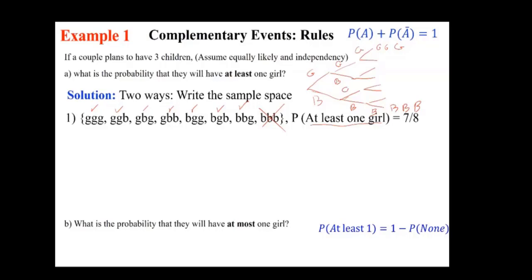Now from the point of view of at least one that was discussed, at least one means 1 minus the probability of none. We want to discuss it from that point of view. None would be that all of them are boys, all boys. The probability that they're all boys would be one-half to the third. If you were to calculate this, it's easier that way, and 1 minus that is the answer.